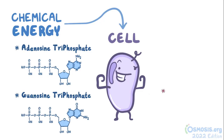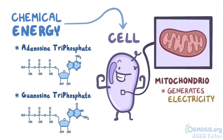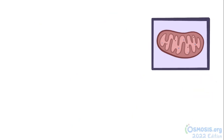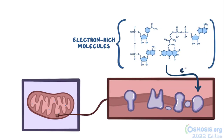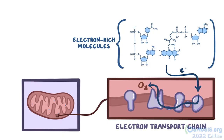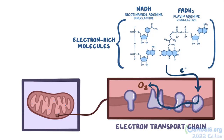For cells to make ATP, a process generating electricity has to take place in our mitochondria. Electricity is power, and thanks to electricity, ATP is made. To create electricity, electron-rich molecules have to deliver electrons to a chain of complexes called the electron transport chain, which move them to a final acceptor — a molecule of oxygen. There are two electron donor molecules: nicotinamide adenine dinucleotide, or NADH, and flavin adenine dinucleotide, or FADH2.